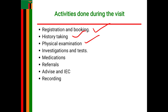On palpation you first check the fundal height to determine how advanced the pregnancy is; this mostly corresponds with the gestational age. You use a tape measure with landmarks of the symphysis pubis, umbilicus, and xiphoid sternum. For example, a measurement of 32 centimetres may indicate a gestational age of approximately 32 weeks, plus or minus 2.